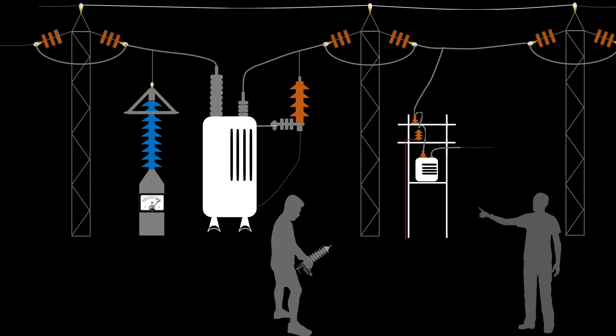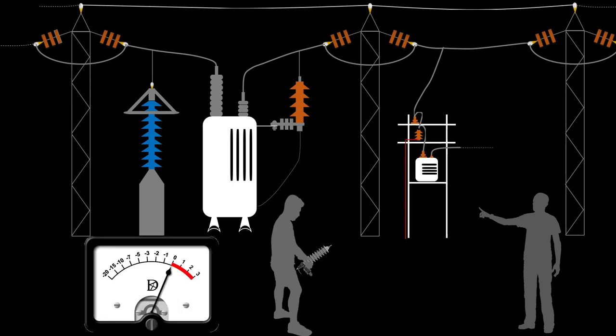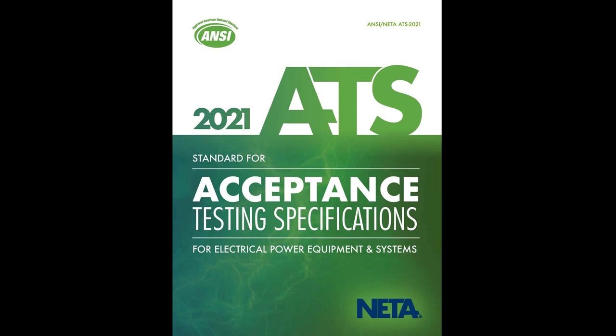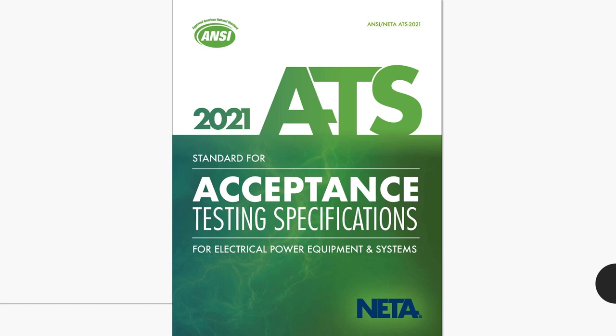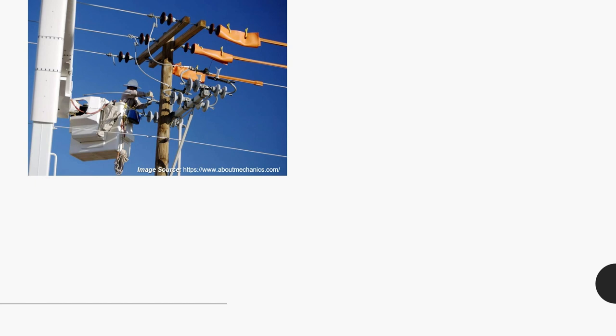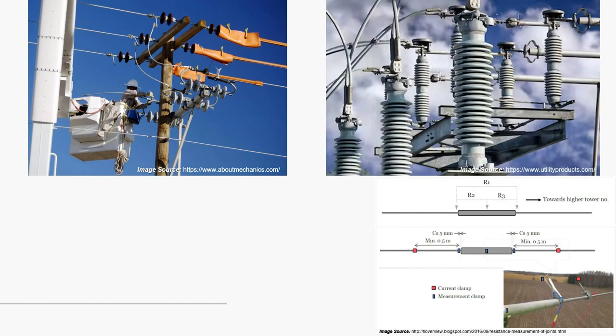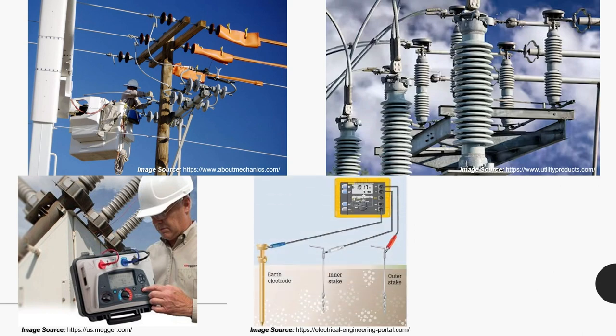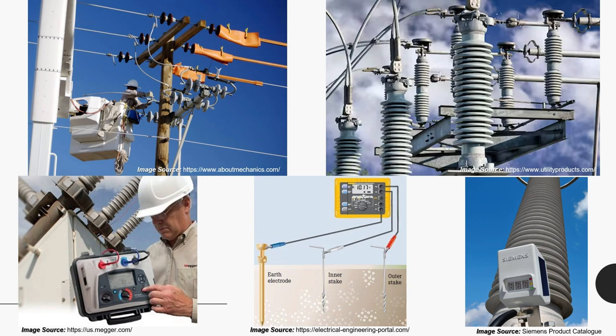Of those tests, it is quite likely to perform the leakage current test at site. Looking at the need of grid operators and electrical utilities for a site condition monitoring procedure, the National Electrical Testing Association (NETA) published Acceptance Testing Specifications (ATS) for electrical power equipment. The field tests recommended by NETA for lightning arresters are visual and mechanical inspections, resistance measurement of bolted joints, insulation resistance between phase and ground terminal, grounding connection resistance measurement, and watt loss measurement of the arrester.